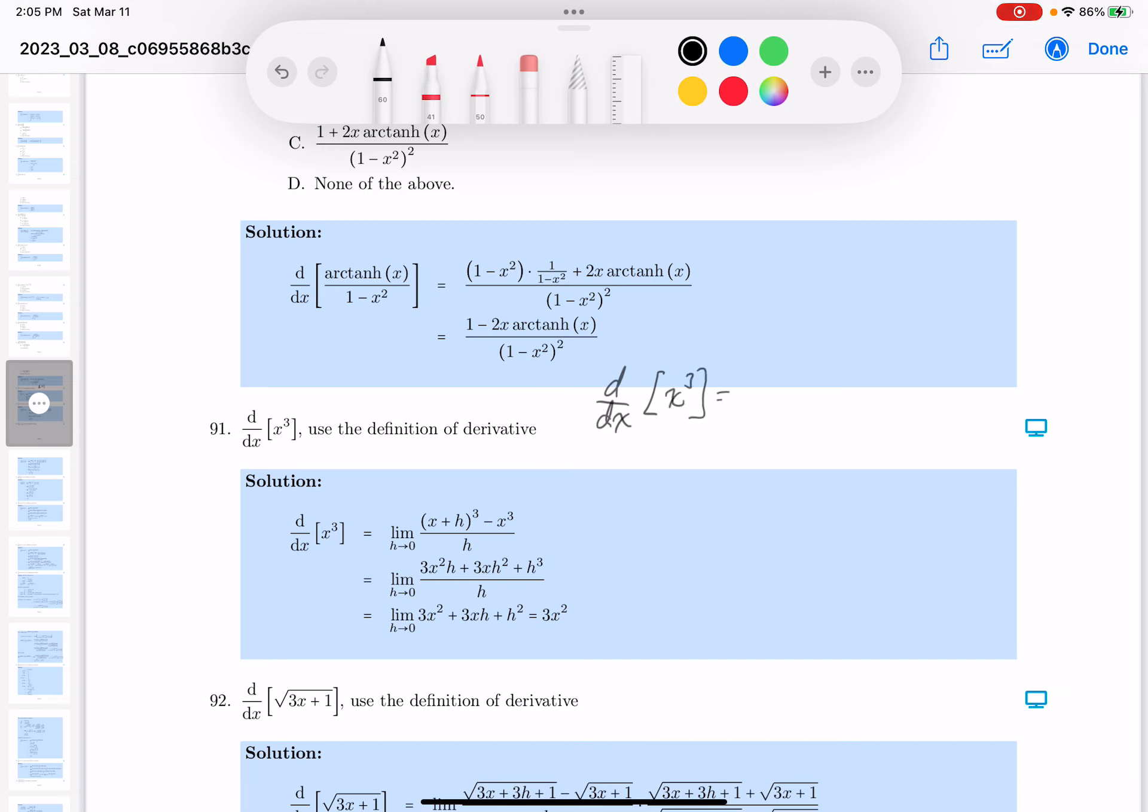They say by definition, limit as h goes to zero. So h goes here. Let's see, minus x cubed goes over here, and what goes here is x plus h cubed.